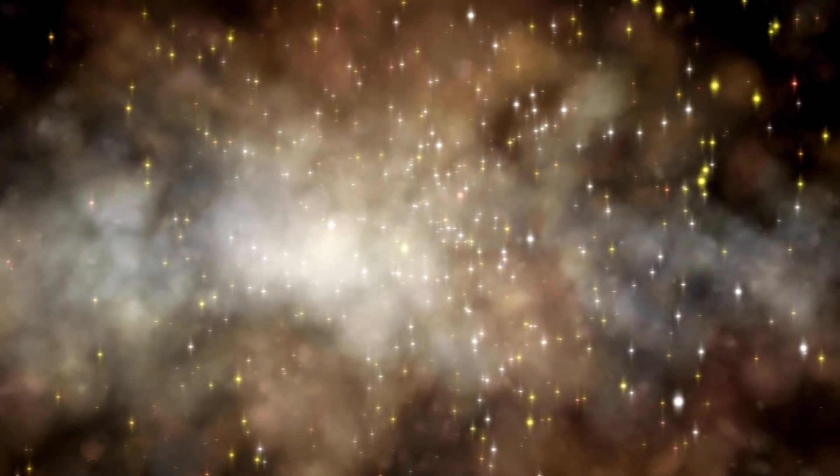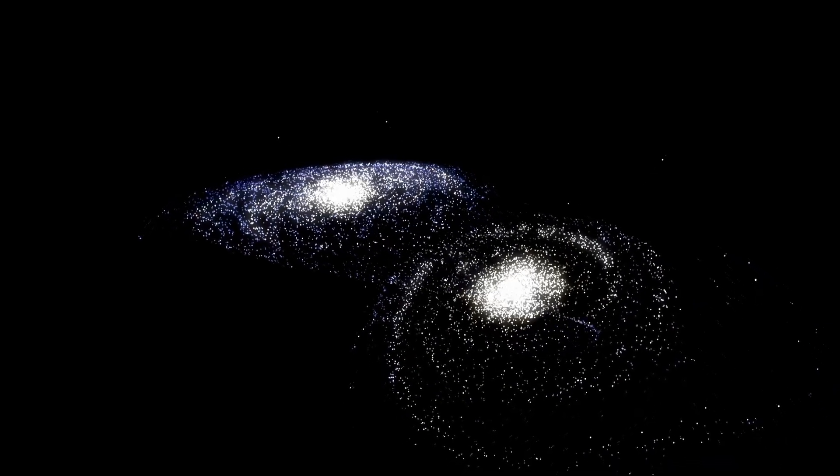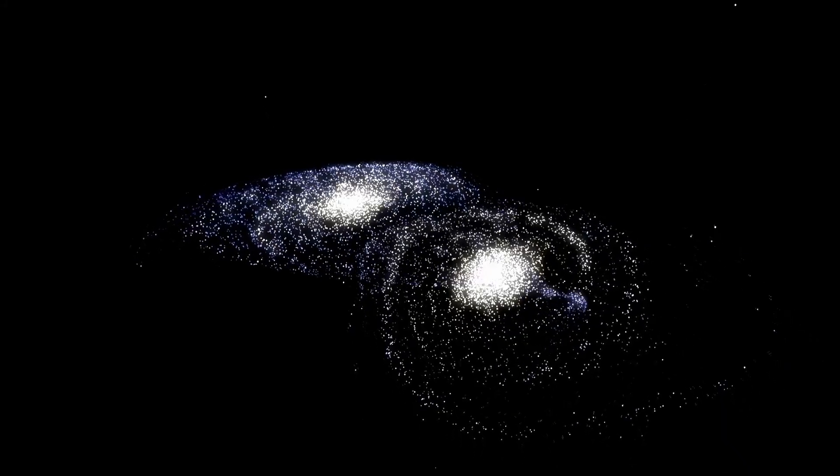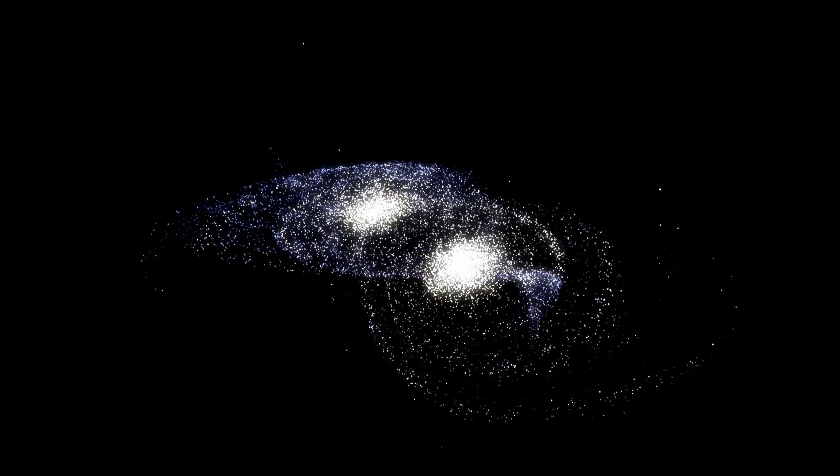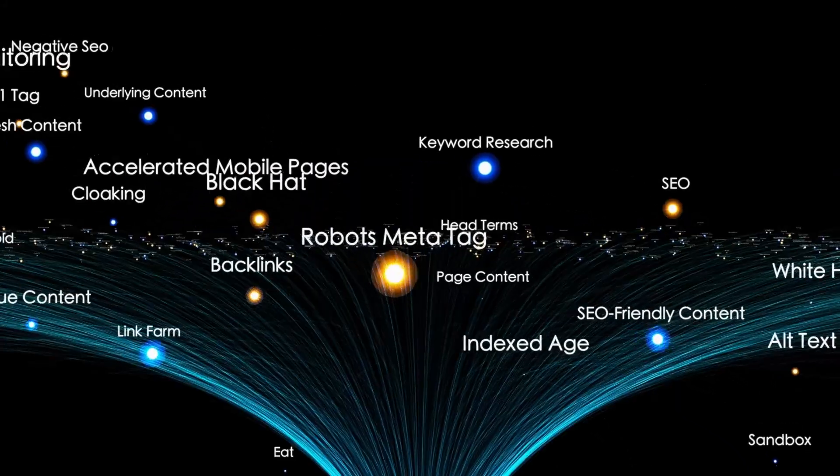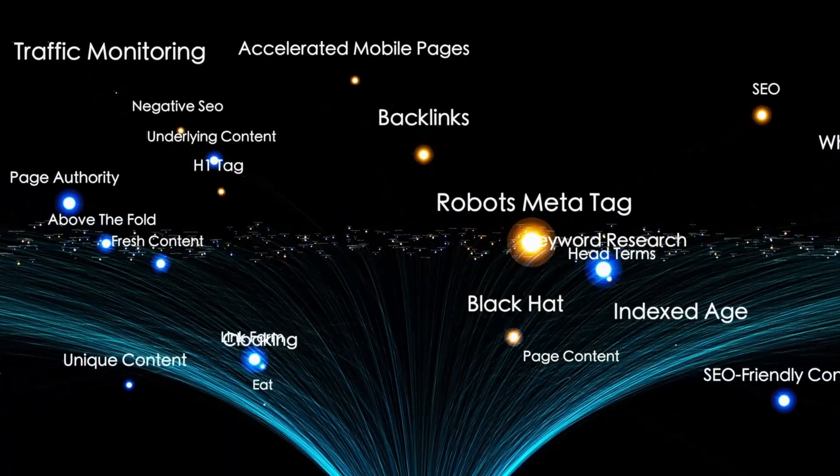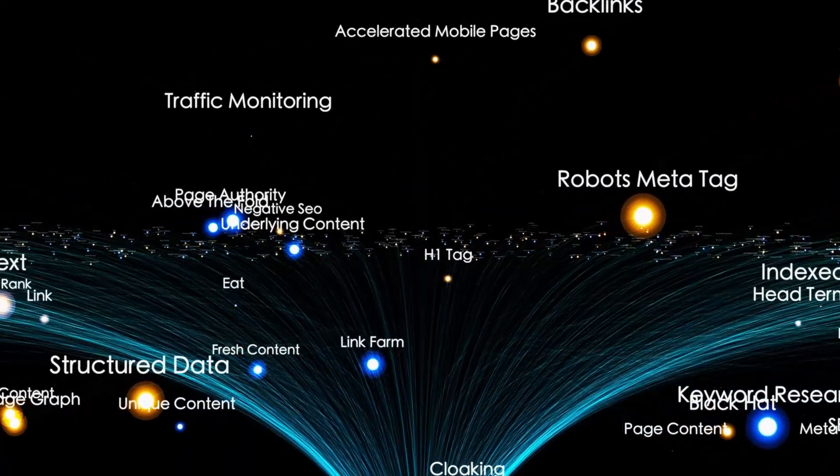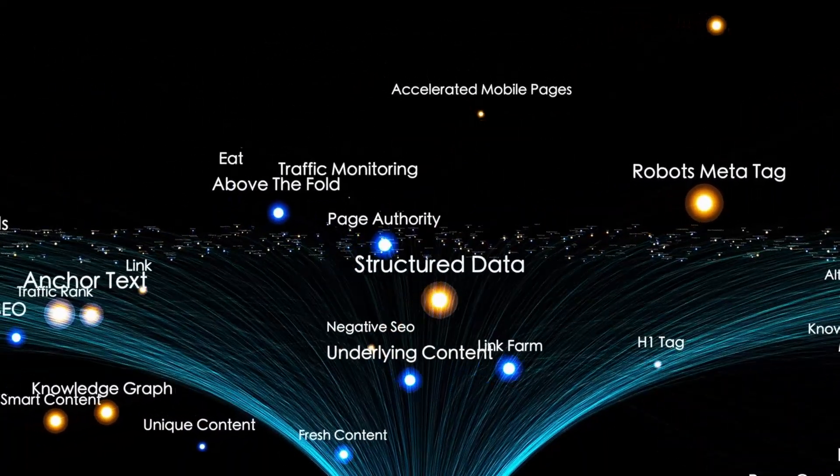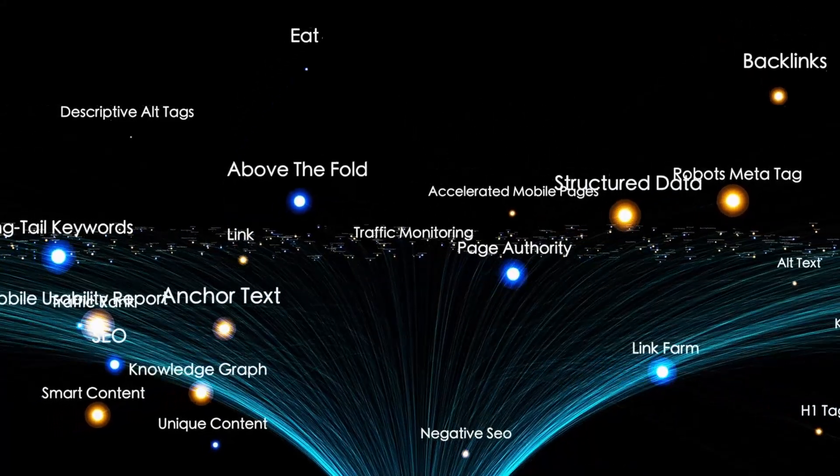Within hours of the split, both pieces were actively maneuvering using their own propulsion systems. We're not watching a comet fall apart. We're watching a spacecraft that just divided itself into two operational vehicles, each apparently capable of independent navigation and mission execution. And both are heading directly toward Earth on trajectories calculated to arrive at our planet from different directions simultaneously.